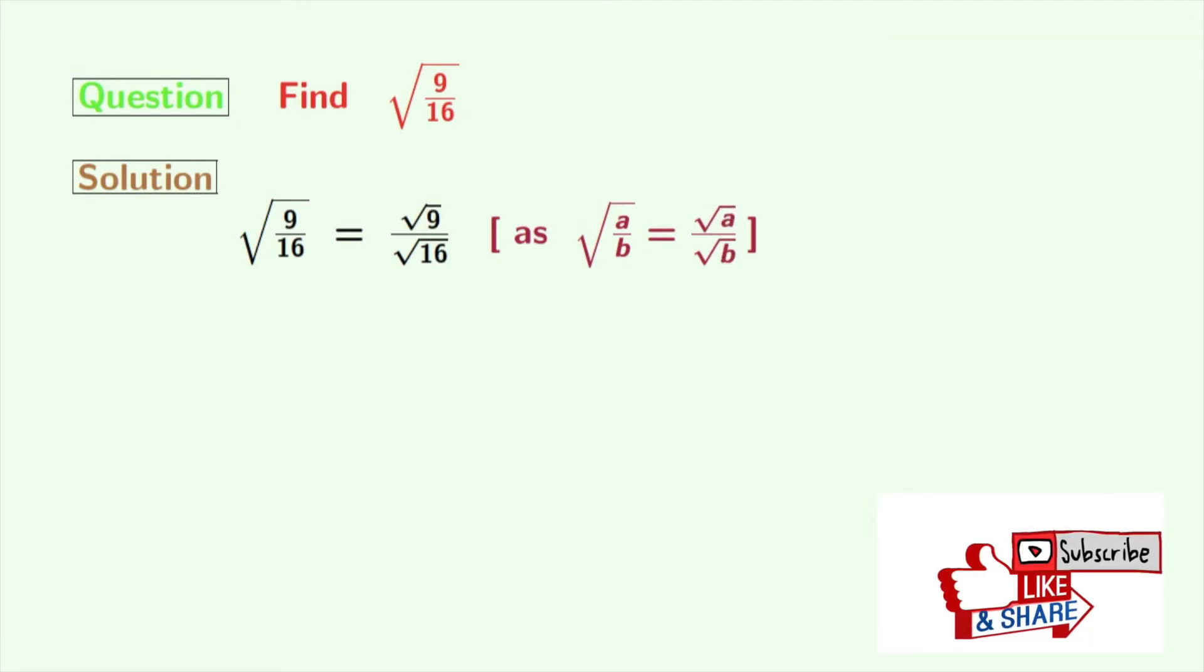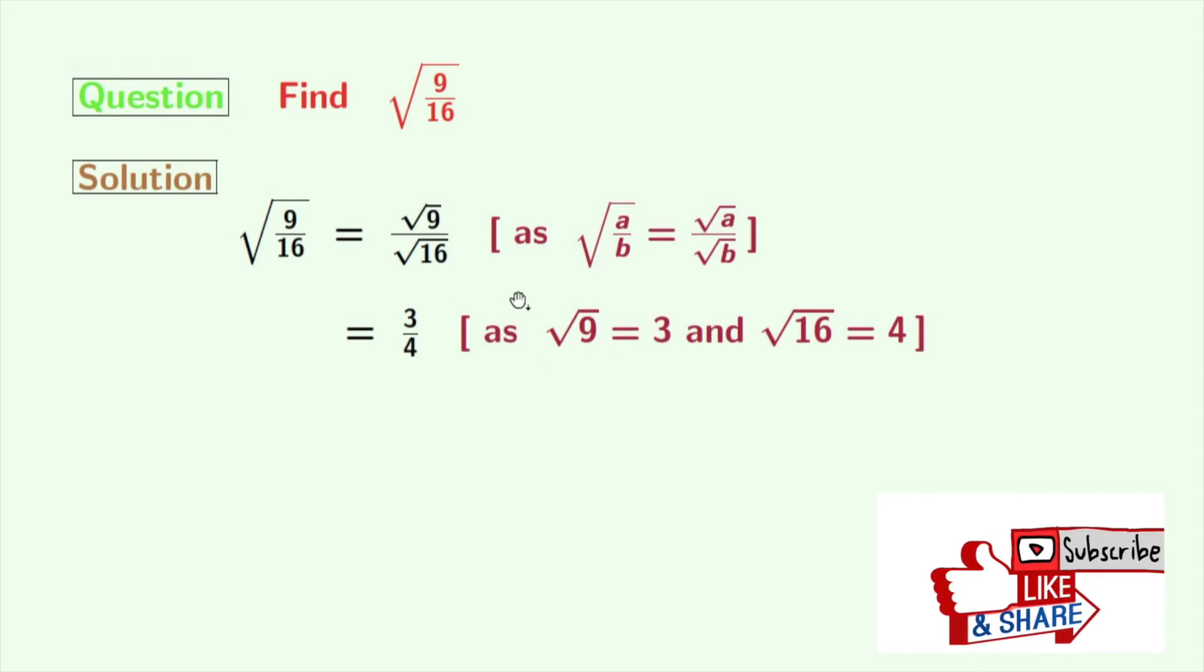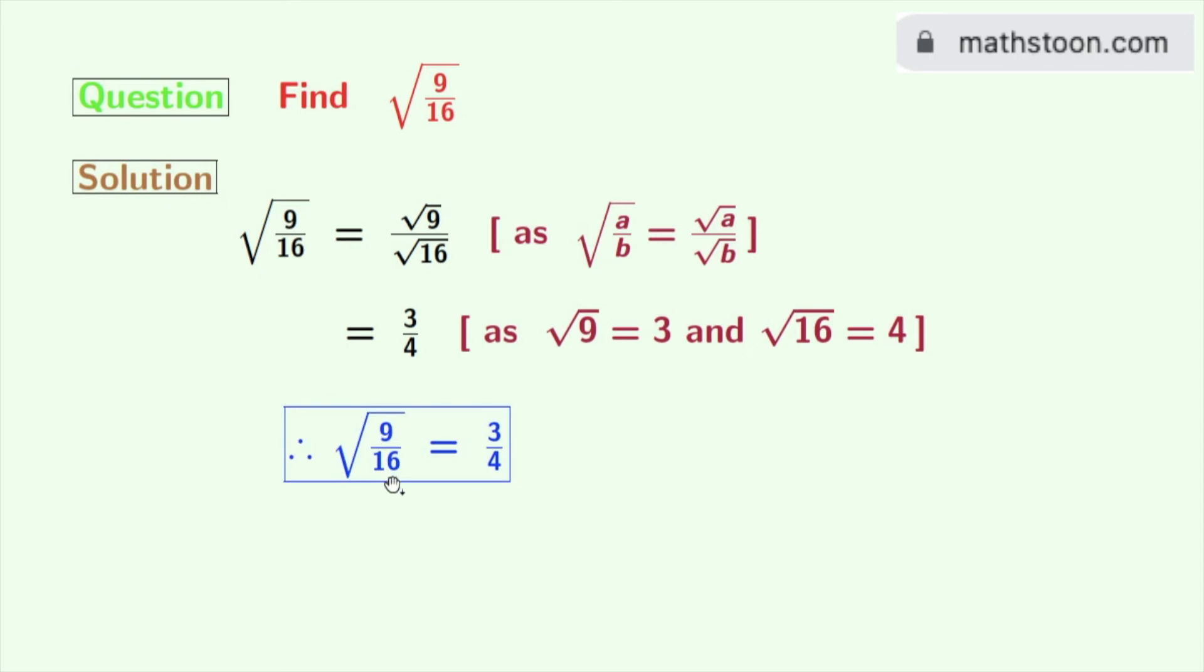Now, as root over 9 is 3 and root over 16 is 4, so we get from this 3 by 4. So finally we get the value of square root of 9 by 16, which is 3 by 4. And this is our final answer.